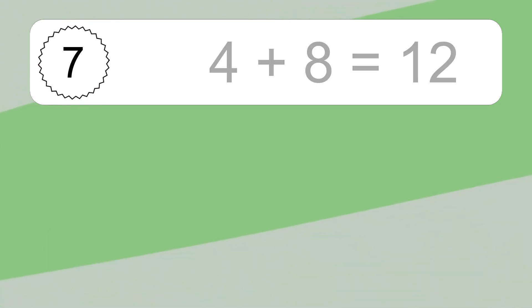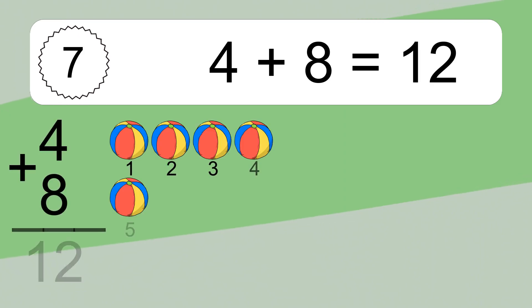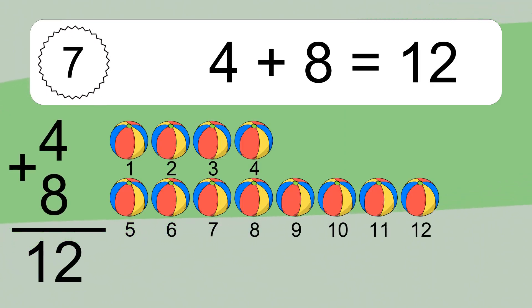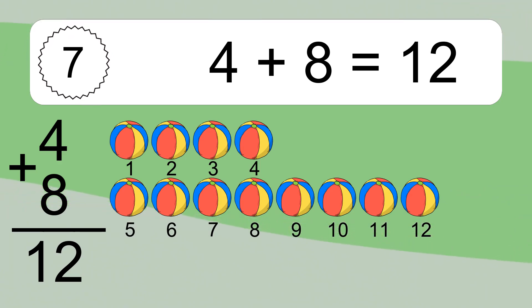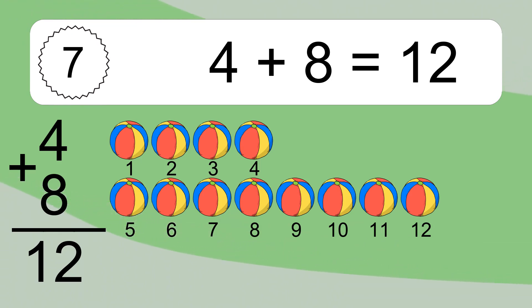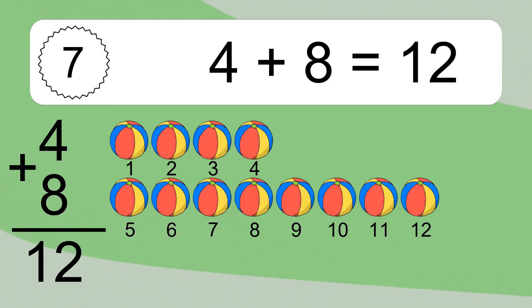4 plus 8 equals what? 4 plus 8 equals 12. Let's count it: 1, 2, 3, 4, 5, 6, 7, 8, 9, 10, 11, 12.